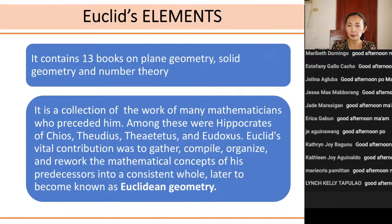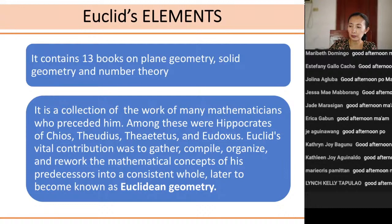You might probably be asking: why should the credit be given to Euclid if everything that he wrote in his Elements were known facts during his time? People during his time knew of what he already wrote in his book the Elements. We still have to give credit to him because he presented the ideas or the works of the different mathematicians in a very organized manner, and that gave rise to what we now call the axiomatic method.